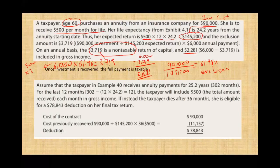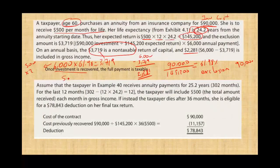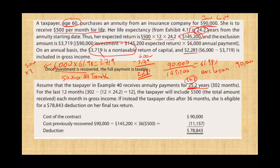Once you recover all your investment — your $90,000 investment is recovered after 24.2 years — if you live beyond that and continue receiving $6,000 per year, it is all taxable because you have already recovered your investment. The full amount becomes taxable. For example, assume the taxpayer receives annuity payments for 25.2 years — you were estimated to live 24.2, but you lived 25.2 years, which is 12 months longer. That's 12 months times $500 equals $6,000 — the taxpayer would include $6,000 in gross income.